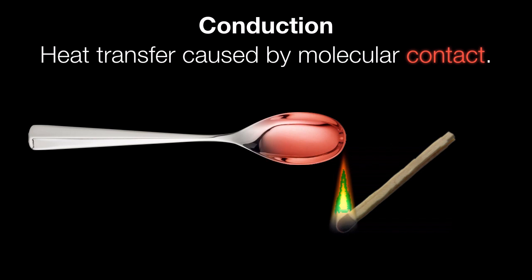Heat is going to travel from the tip of the spoon, which is the part in contact with the heat, throughout the handle of the spoon. The reason this is happening is because the little molecules within the spoon are vibrating as they heat up, transferring that vibrational energy from one molecule to the next. The heat is being transferred through the spoon because the molecules are in contact with each other. That's the best example of conduction.